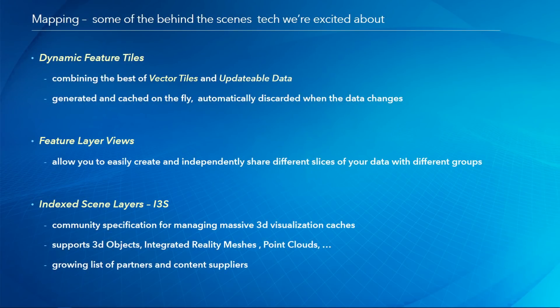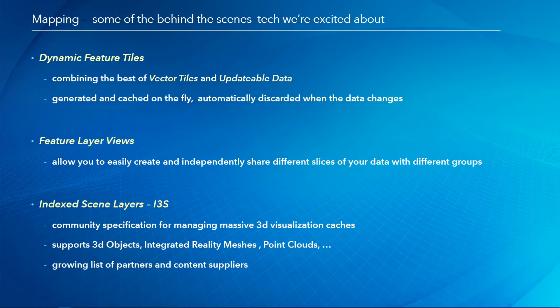Behind the scenes, we're also very excited about dynamic feature tiles that combine the best of vector tiles and updatable data. These are generated and cached on the fly, and automatically discarded when the data changes. Feature layer views allow you to easily create and independently share different slices of your data with different groups. And then indexed scene layers and layer packages — a community specification for managing massive 3D visualization caches with support for 3D objects, integrated reality meshes, point clouds, and a growing list of partners and content suppliers.